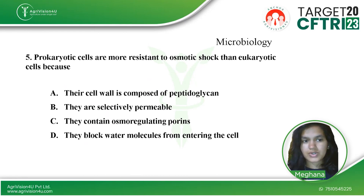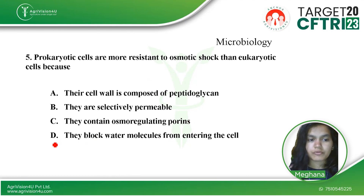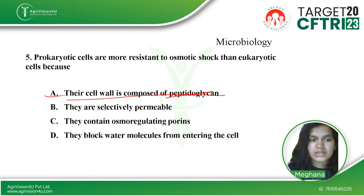The last question is from microbiology: prokaryotic cells are more resistant to osmotic shock than eukaryotic cells because — option A, their cell wall is composed of peptidoglycan; option B, they are selectively permeable; option C, they contain osmoregulating proteins called porins; option D, they block water molecules from entering the cells. Prokaryotic cells have a cell wall composed of peptidoglycan, making them more resistant to osmotic shock. So option A is the right answer.